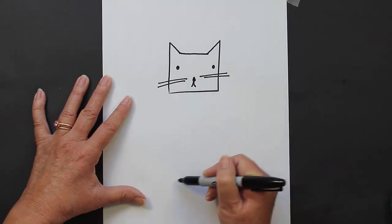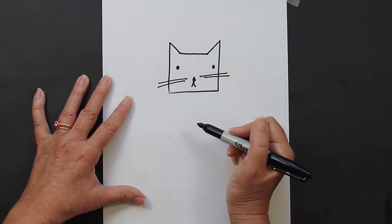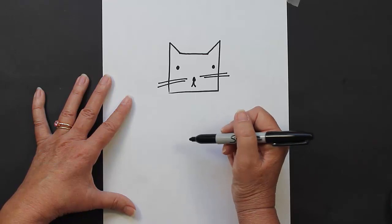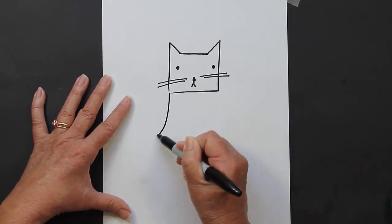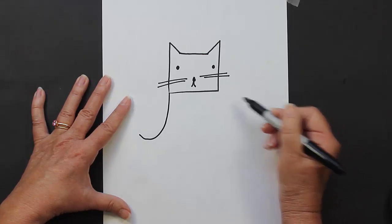Now what I'm going to do is make the bottom part of our mermaid cat, which is actually the tail of the mermaid. So what we're going to do is make a curved line and then another curved line.